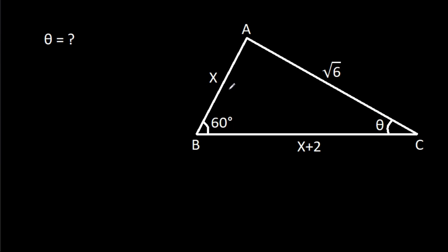In this video, we have been given that AB is x, BC is x plus 2, and AC is root 6. Angle ABC is 60 degrees and angle ACB is theta. We have to find theta.